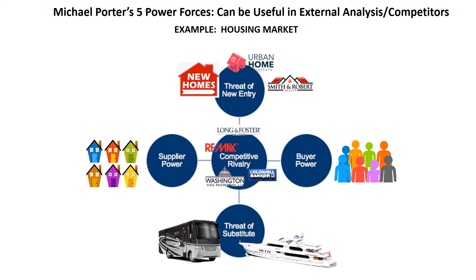Other products are more complex and require more thought — for example, the housing market. If my client is Long and Foster in Washington DC, I will note that I have plenty of competition from firms like Coldwell Banker and Washington Fine Properties. I also might be leery of new entrants like Urban Homes and Smith and Robert. Furthermore, Generation Z is less interested in home ownership and may be looking at substitutes like owning a houseboat or an RV. The bargaining power of suppliers and buyers is also in flux, just as it was with ground beef.